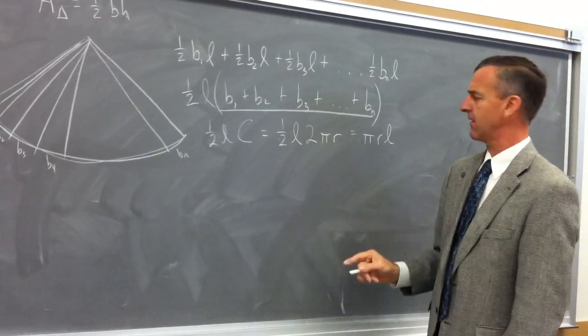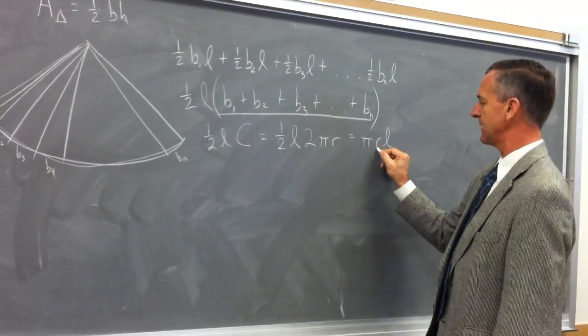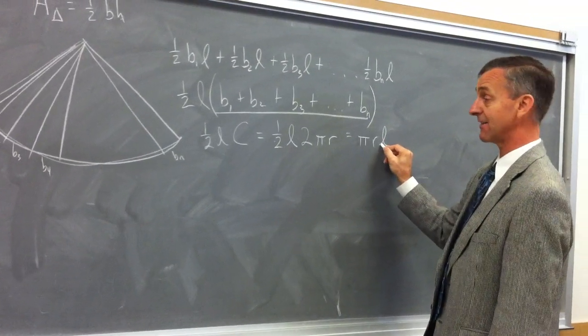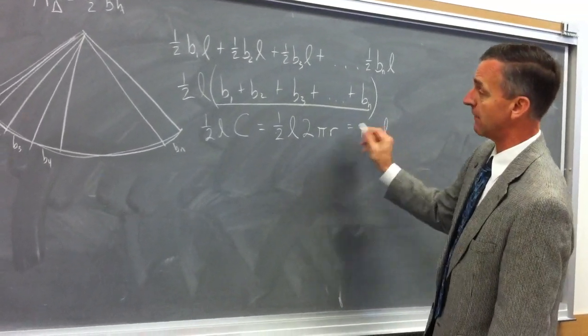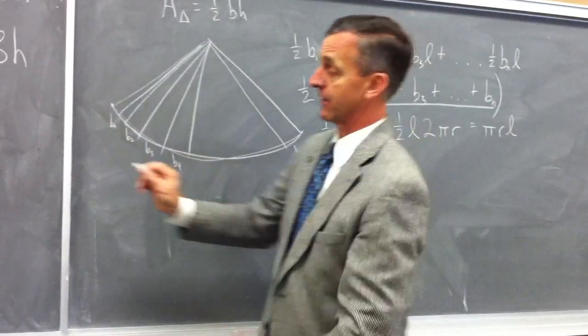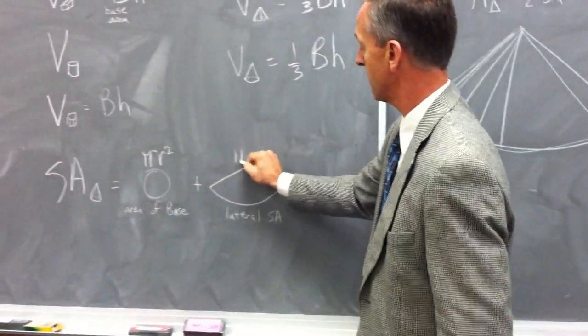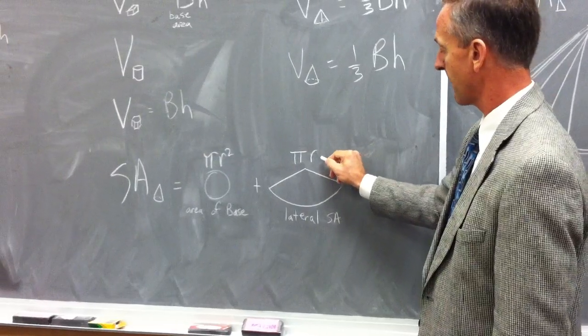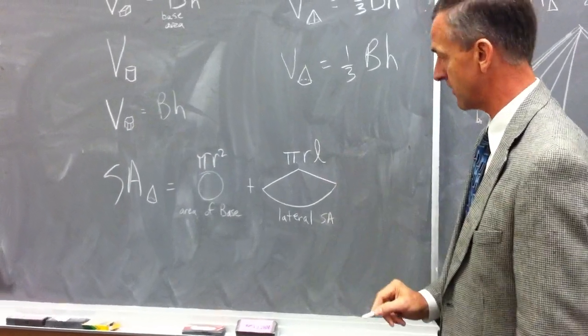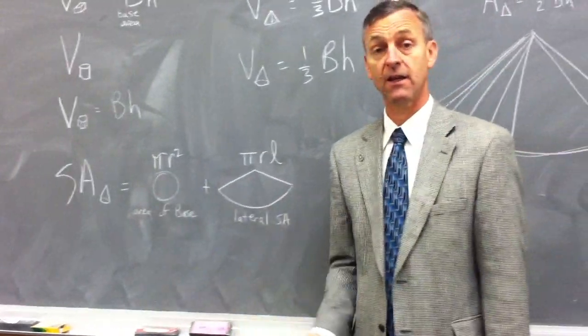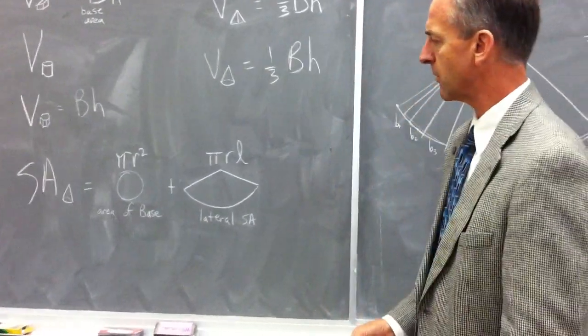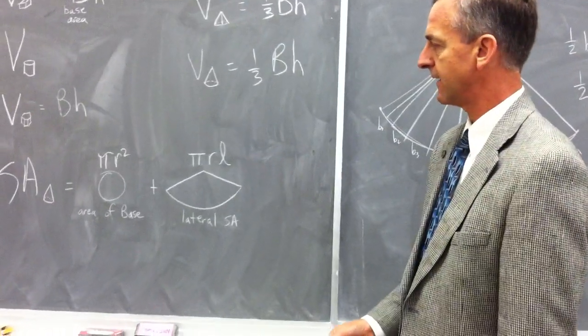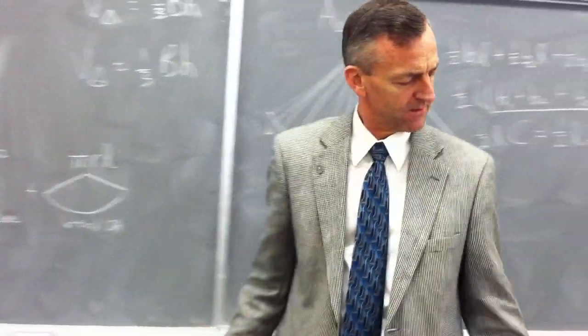Pi r l, pi times radius times slant height, is the formula for the lateral surface area. So we'll put pi r times the radius of the base of the cone times the slant height of the cone. And there is the surface area formula for a cone.